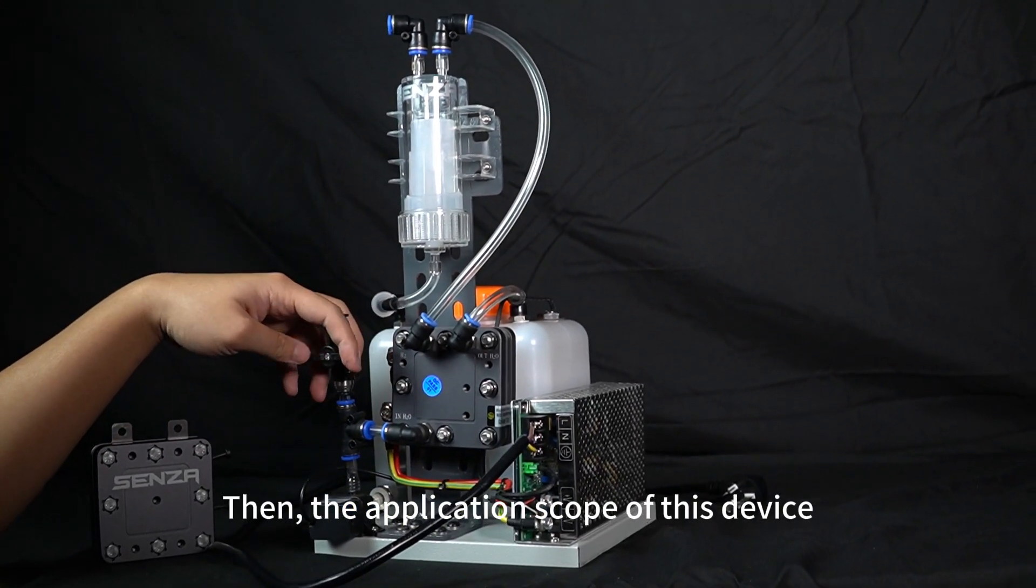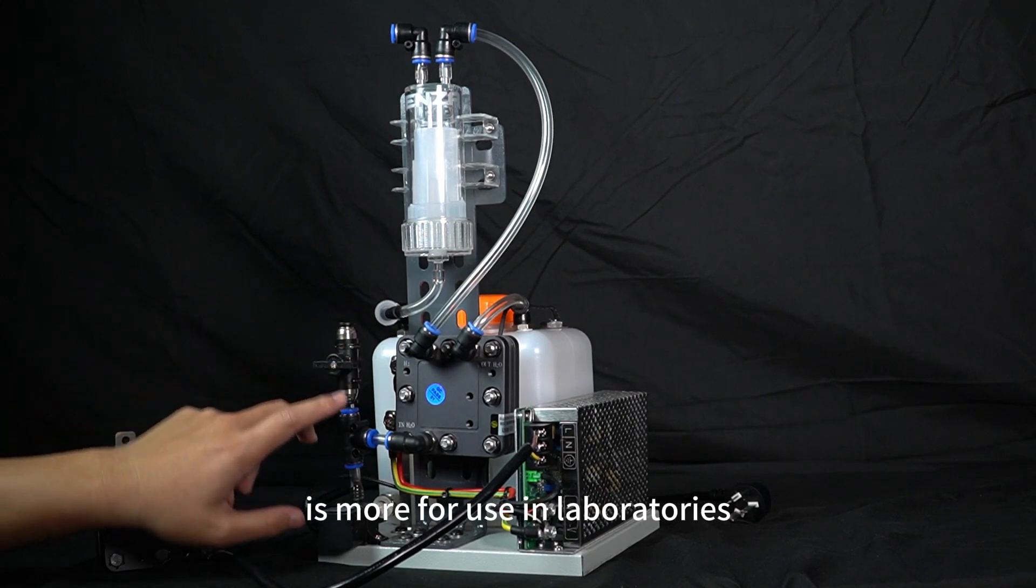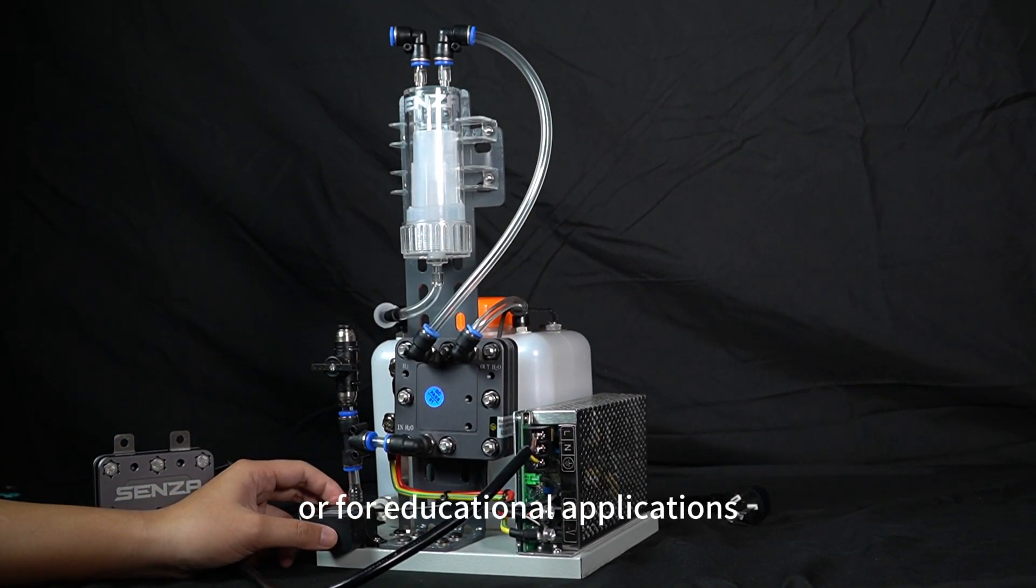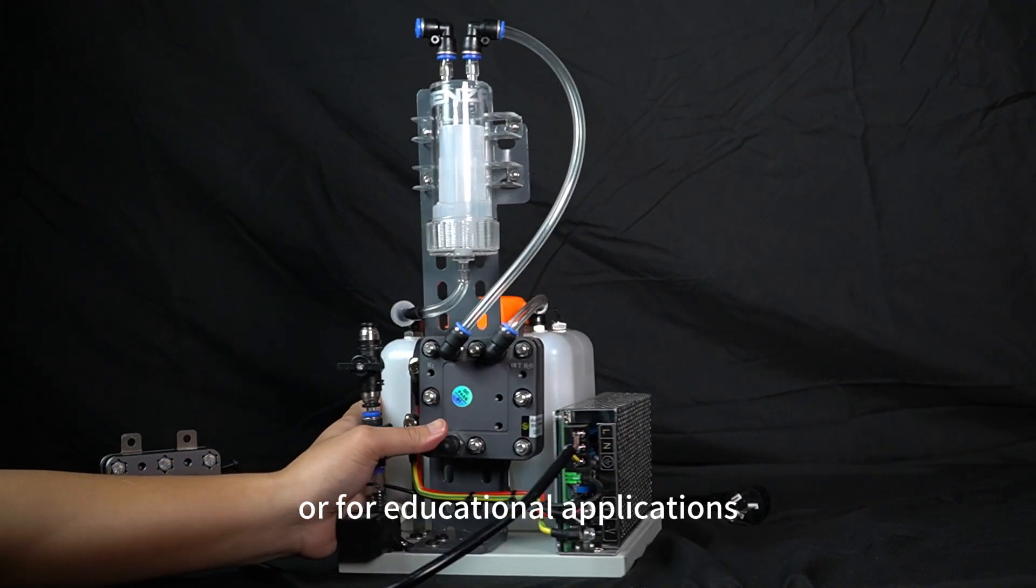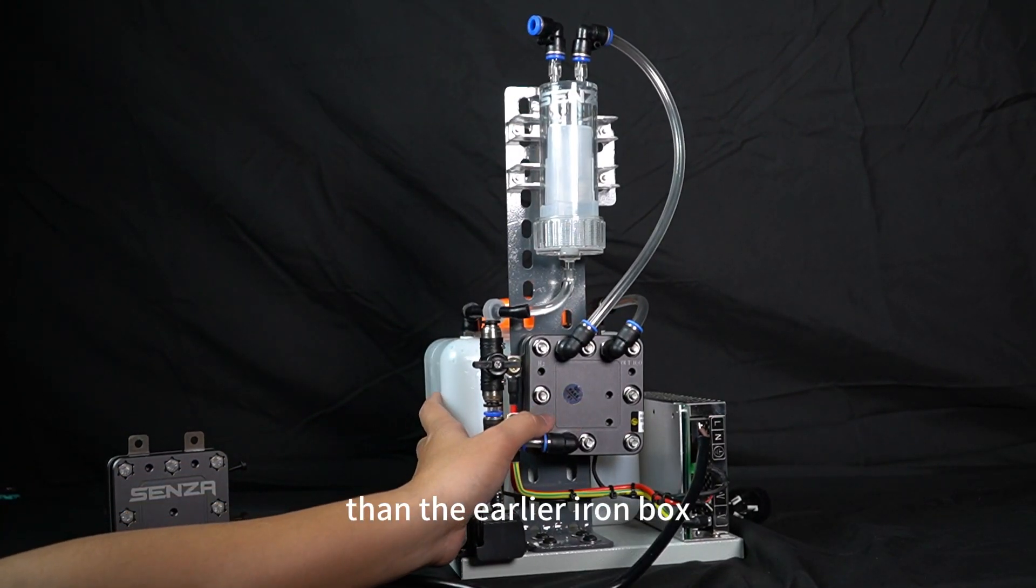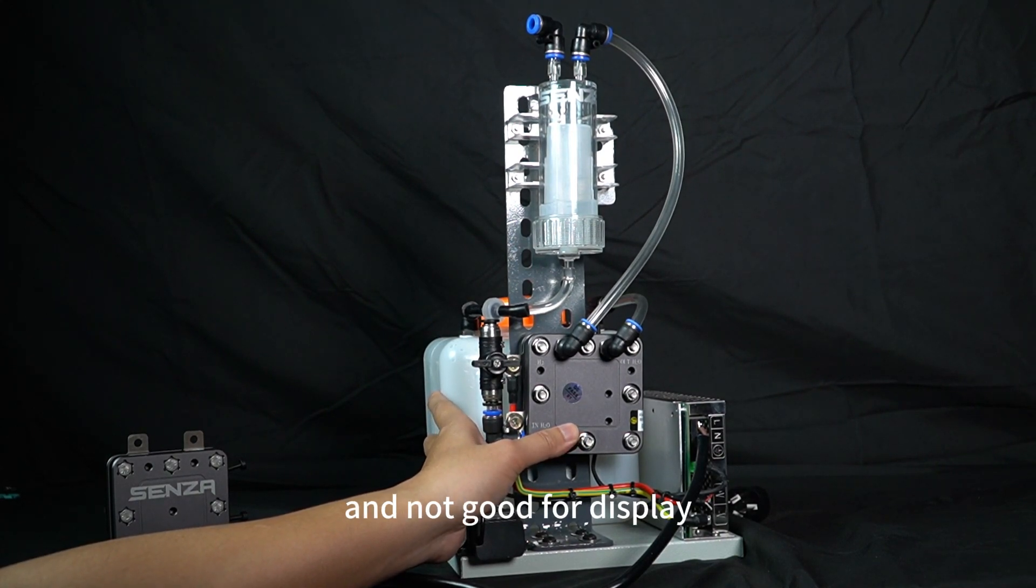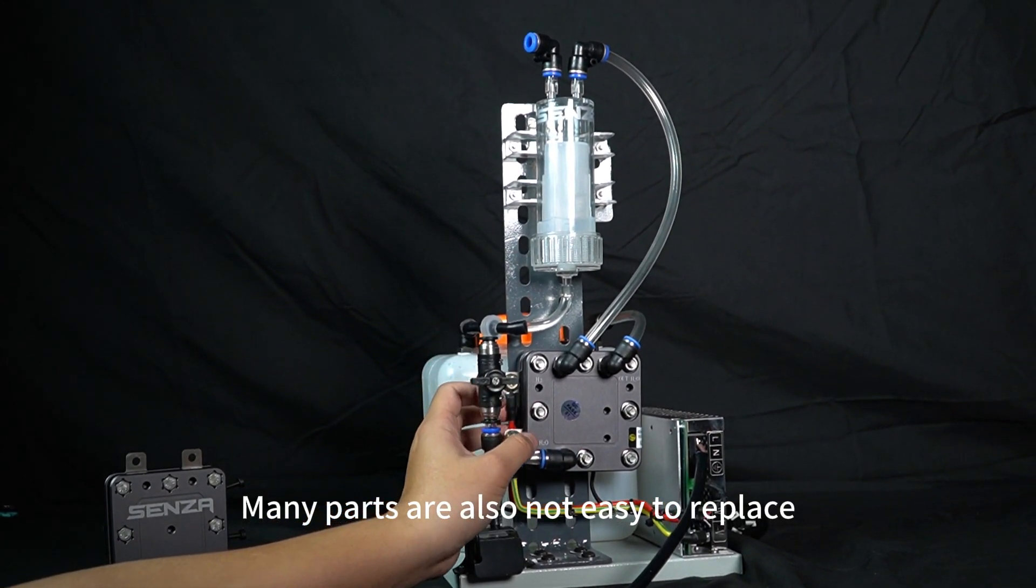The application scope of this device is more for use in laboratories, or for display in your showrooms, or for educational applications. It's more suitable than the earlier iron box, because it's not transparent and not good for display, and many parts are also not easy to replace.